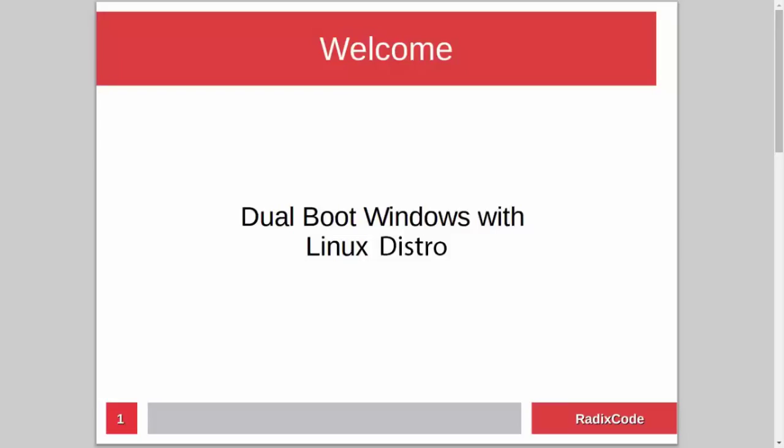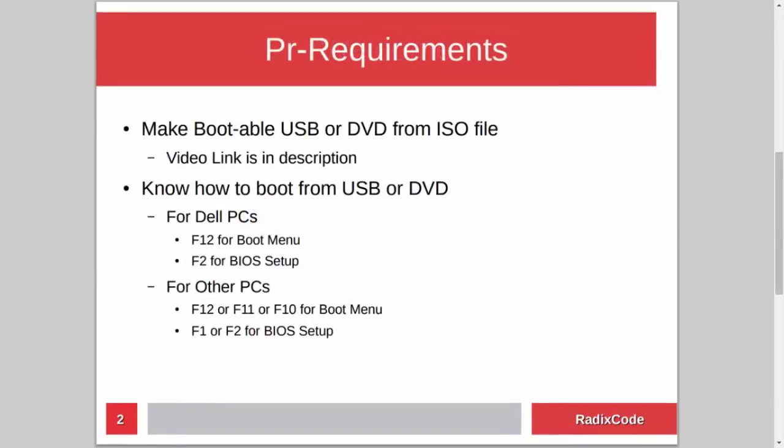Hi guys, it's Azim again from rediscord.com. In this video tutorial I will show you how to dual boot Windows with a Linux distribution. For this you have to know how to make a bootable USB or DVD from an ISO file. I already made a tutorial on this topic, so if you don't know how to do this, please check out my video — I will add the link in the description.